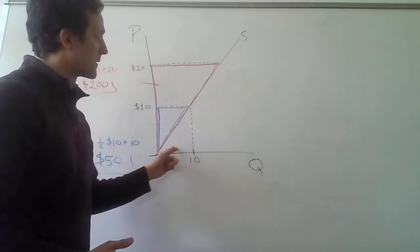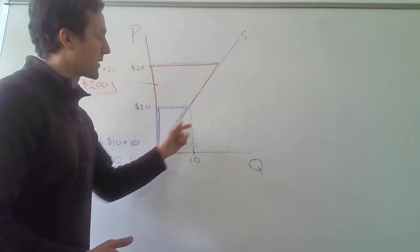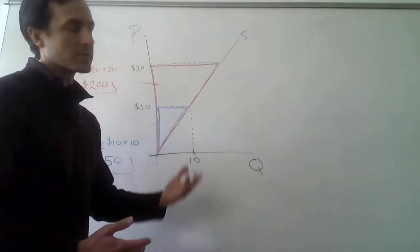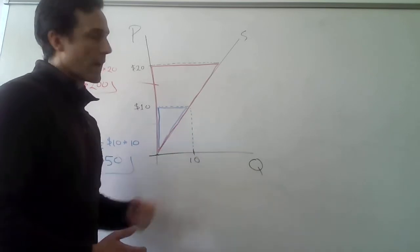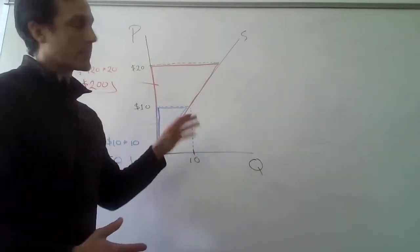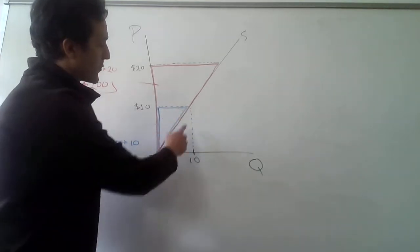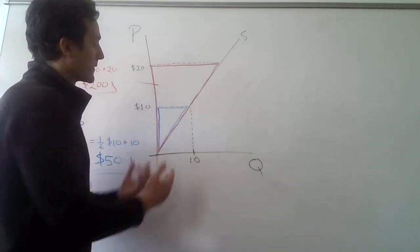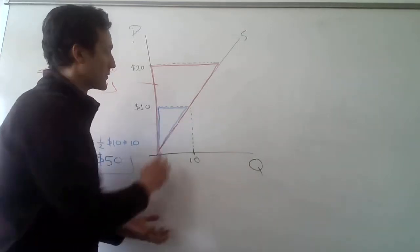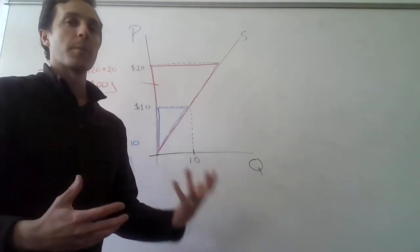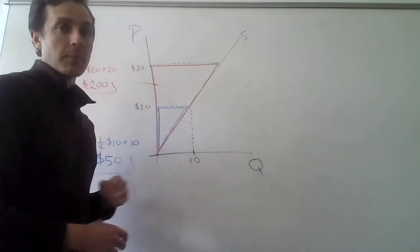And then the variable costs are actually represented by the height of the supply curve, almost a marginal cost, but if we take that triangle underneath the supply curve, that's variable cost. And so what we're left with after taking revenue, the rectangle, and then subtracting off the lower triangle below the supply curve, then we're left with producer surplus, right? Producer surplus is kind of the bonus that the firm gets from supplying those units at that price, right?